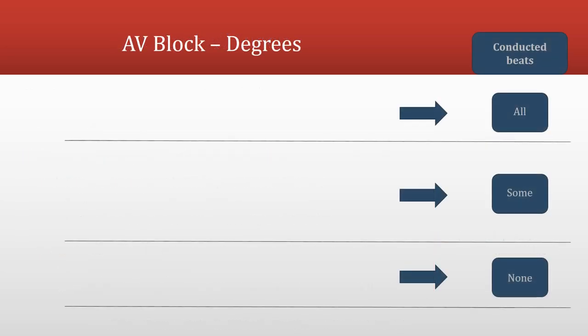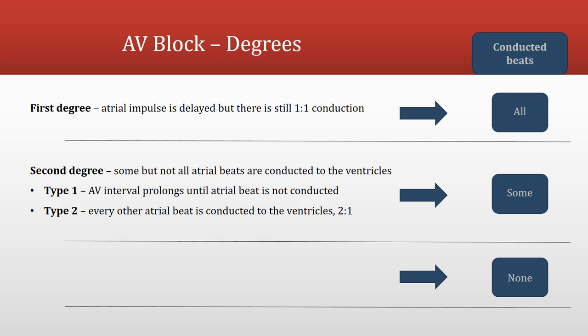There are varying degrees of AV block. If all beats are conducted, you have first degree block — the atrial impulse is delayed but there is still one-to-one conduction. If some beats are conducted, you have second degree block: in type one, the AV interval gets progressively longer until a beat is not transmitted; in type two, every other beat is conducted, giving two-to-one conduction. If none of the beats are conducted and the atria and ventricles are completely dissociated, you have third degree or complete AV block.